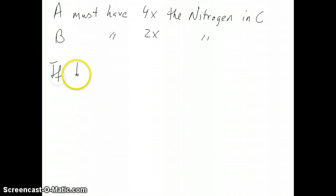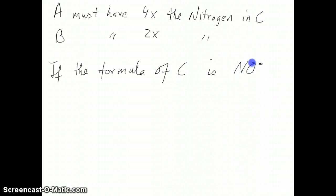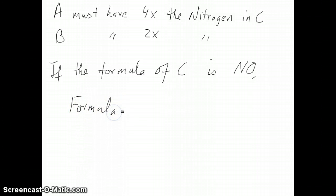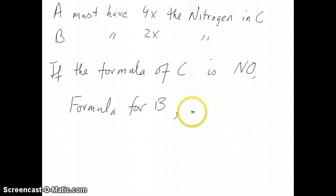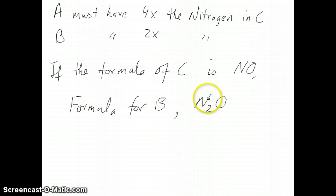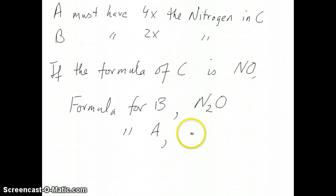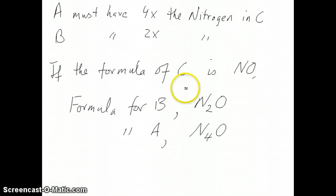A must have 4 times the nitrogen of C, and B must have twice the nitrogen of C. So if the formula of compound C is NO, then compound B should have twice the nitrogen — so it would be N₂O. And compound A, with 4 times the nitrogen, should be N₄O. That's how you can derive formulas when you know the formula of one of the compounds.